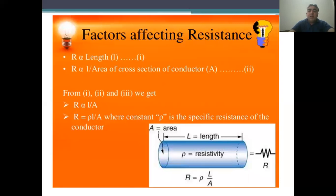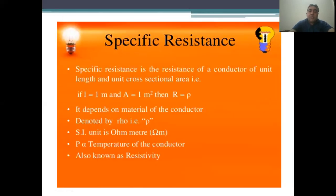You must understand the difference between resistance and resistivity — there should be no confusion about this. Specific resistance, or resistivity, is the resistance of a conductor of unit length and unit cross-sectional area. When length equals one meter and area equals one meter square, then R equals resistivity. It depends on the material of the conductor, is denoted by rho, and its SI unit is ohm-meter.